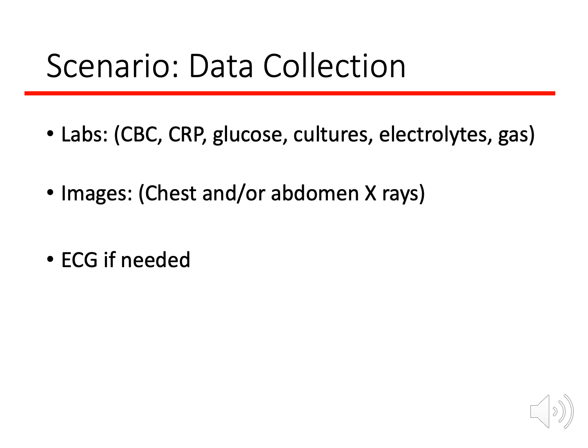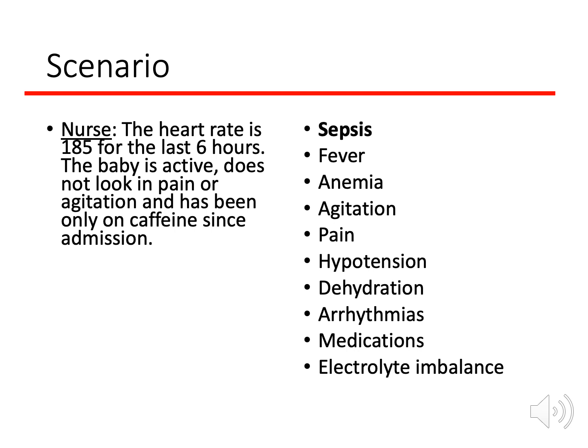When presented with tachycardia, first ask 'why' and generate a differential diagnosis. As shown on the right side of the slide, all the things that can cause tachycardia include: sepsis, fever, anemia, agitation, pain, hypotension, dehydration, arrhythmia, medications, and electrolyte imbalance. But you cannot treat the patient based on this wide list alone — the picture is still not clear. You need to narrow the differential diagnosis.